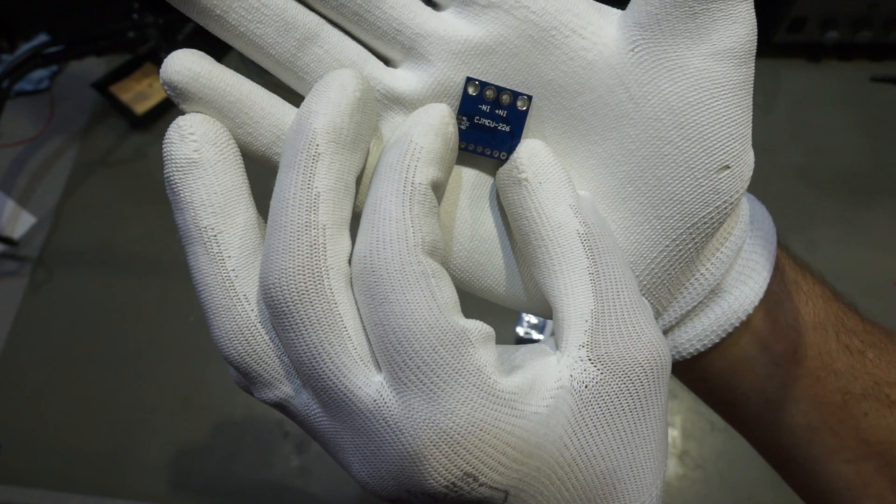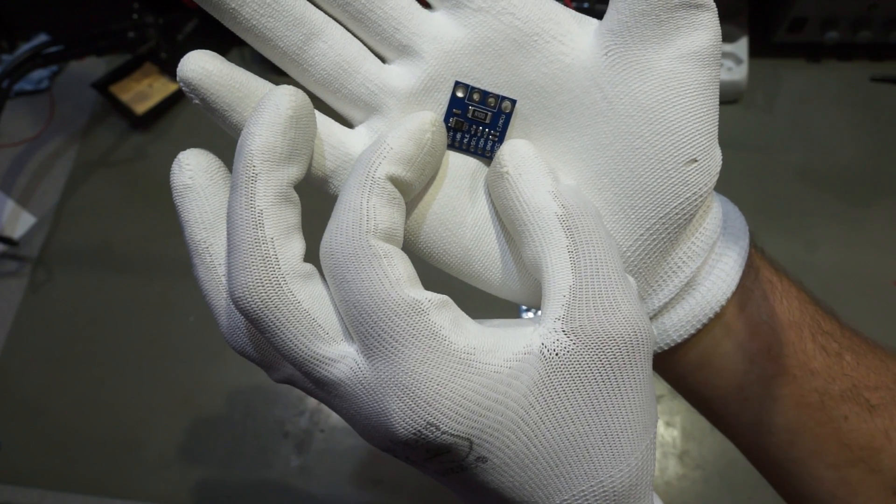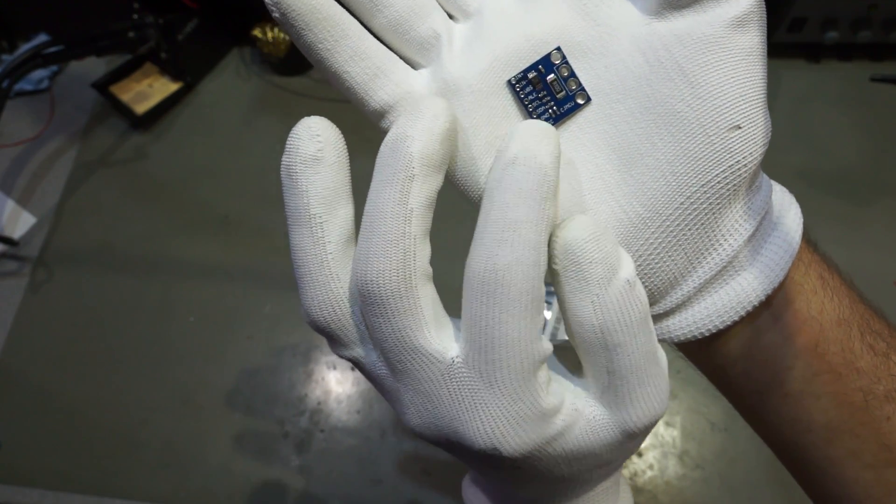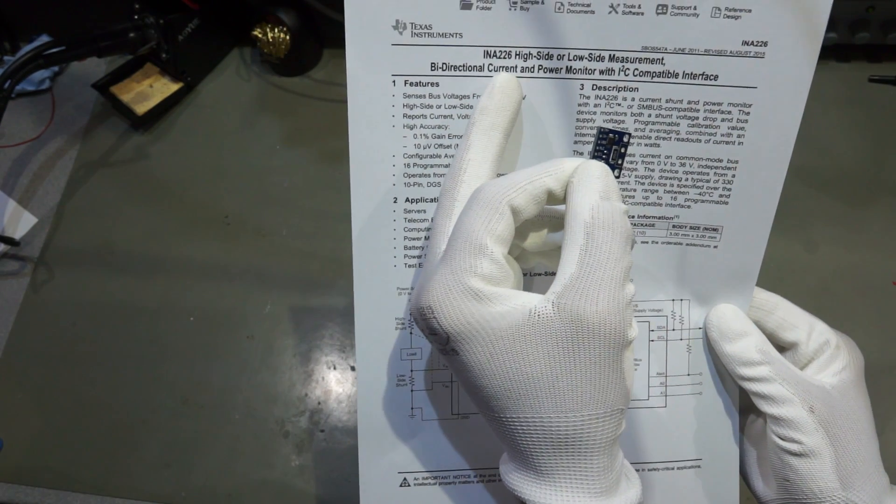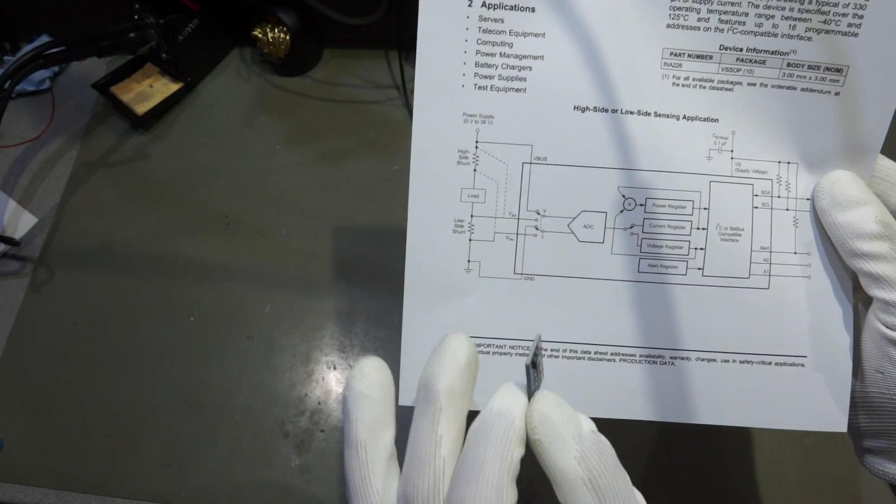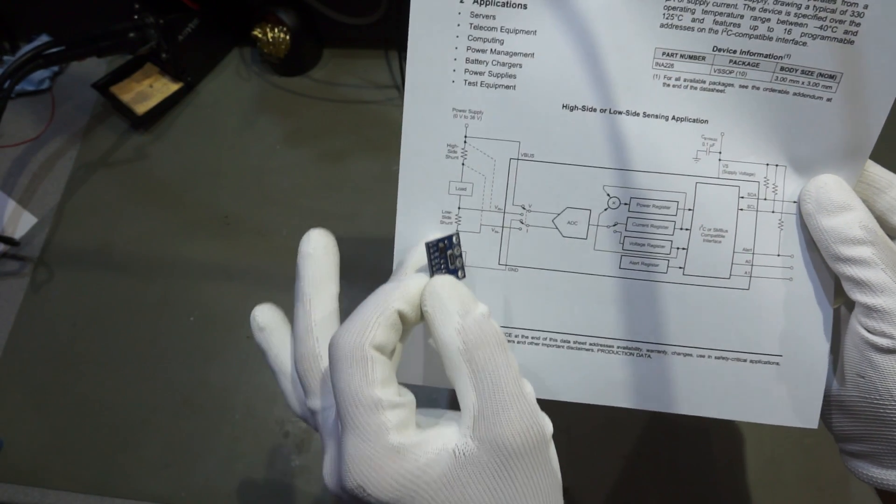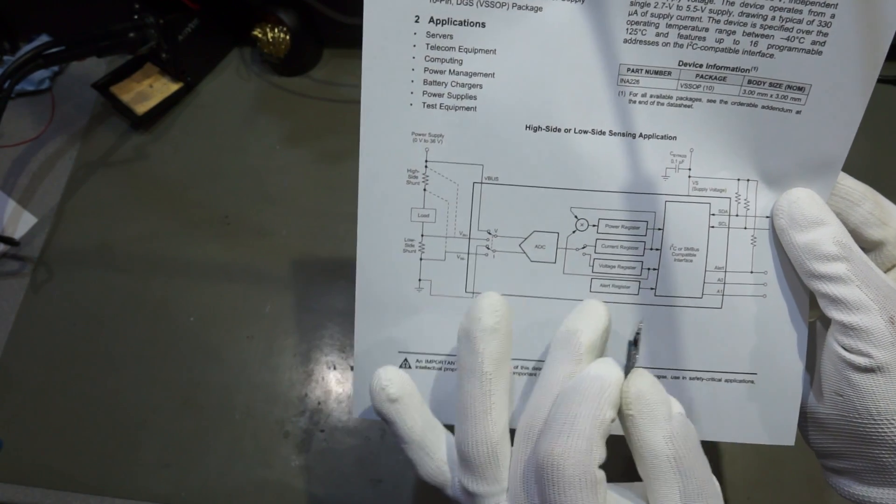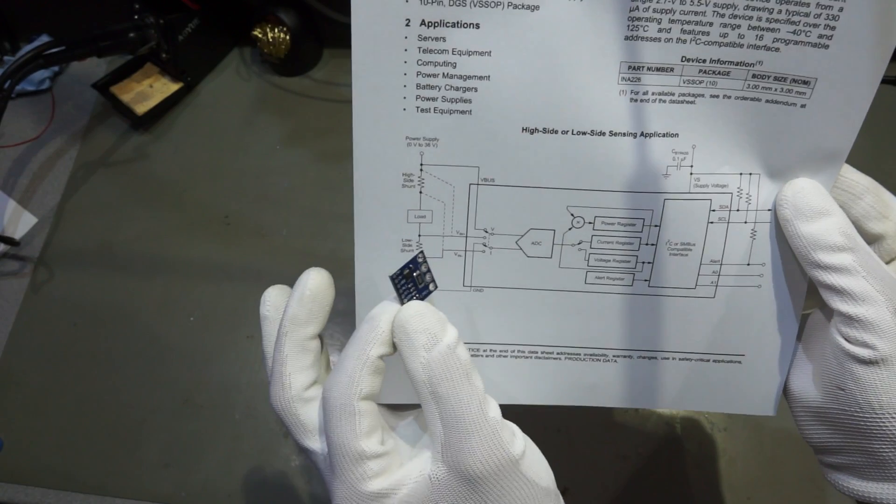They are CJMCU226. And you see here, they have quite a big shunt resistor, so they should measure current, one could assume. And they have SCL and SDA, so they are I2C devices. This small chip is an INA226 from Texas Instruments and it is a current shunt and power monitor. The interesting thing is, you can measure on the low side or on the high side, you can measure current and you can also measure voltage. So if you multiply the two, you also have the power. A very neat chip for my solar project.